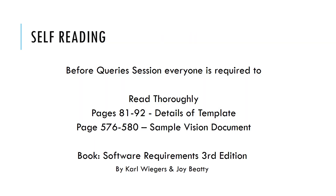For self-reading, the sections explained today can be found on pages 81 to 92. The sample vision document as a whole can be found on pages 576 to 580, which relates to software requirements.